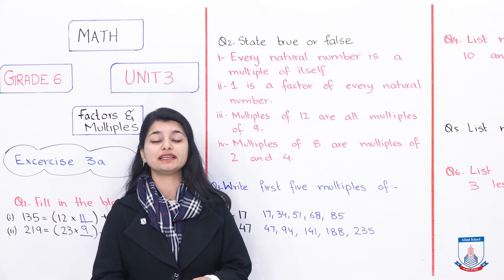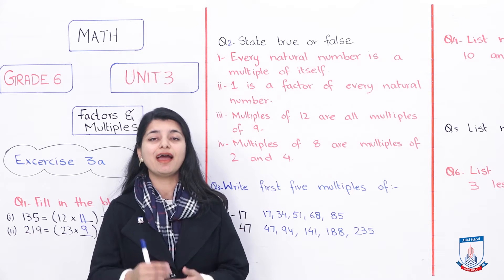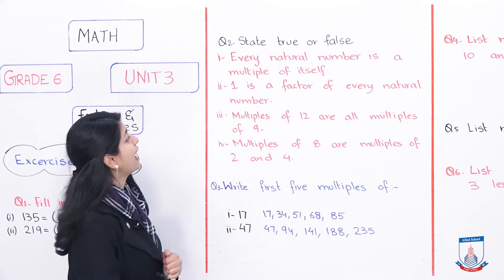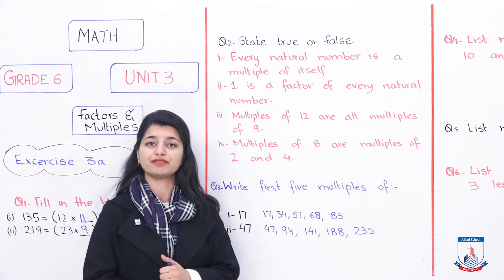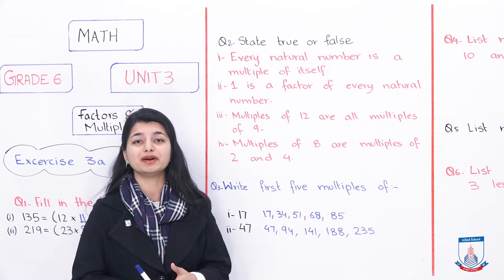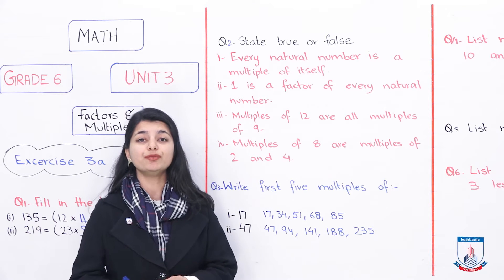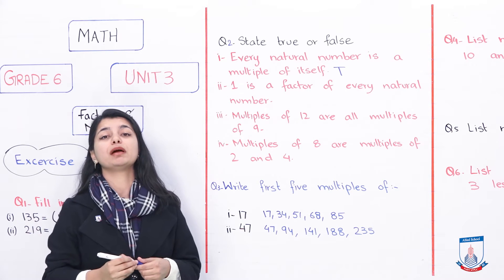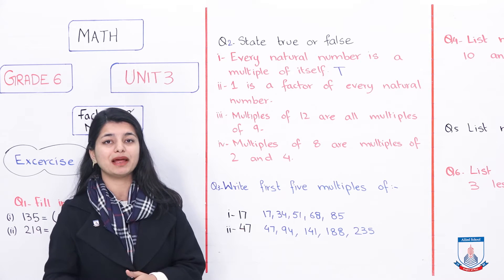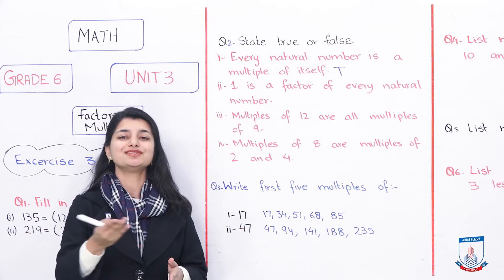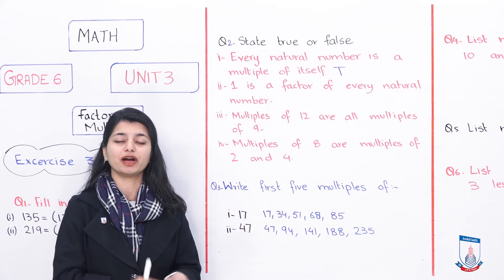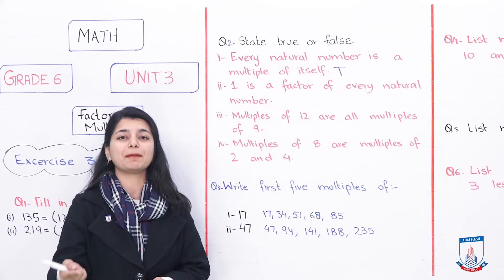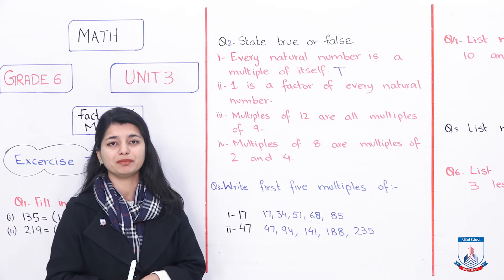Question number 2 is about stating true and false. They give you statements and you have to tell which is true and which is false. The first statement is: every natural number is a multiple of itself. That is definitely true, because every number multiplied by 1 gives itself — 2 into 1 is 2, 4 into 1 is 4, 12 into 1 is 12. So the first statement is true.